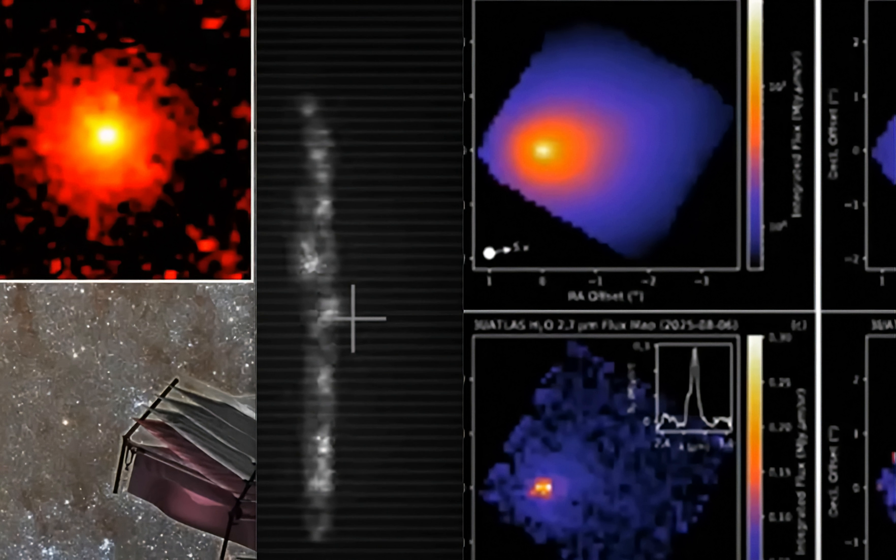Especially the images from the James Webb Telescope. They're showing that this thing is not off-gassing like a comet normally does. And if you can't tell from the images here, there is no tail on this alleged comet.